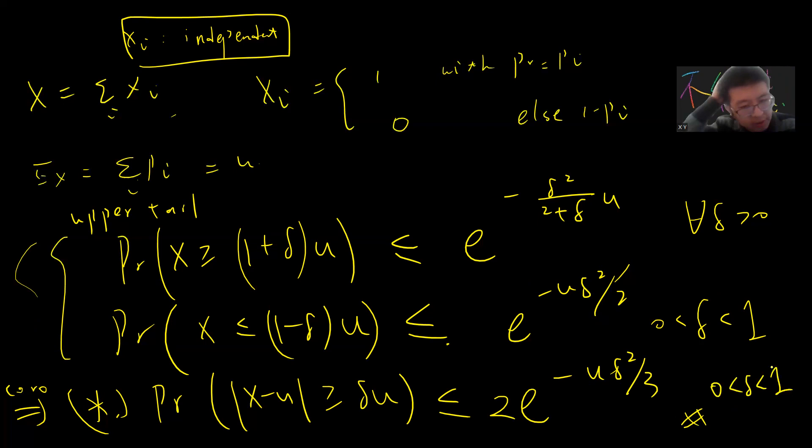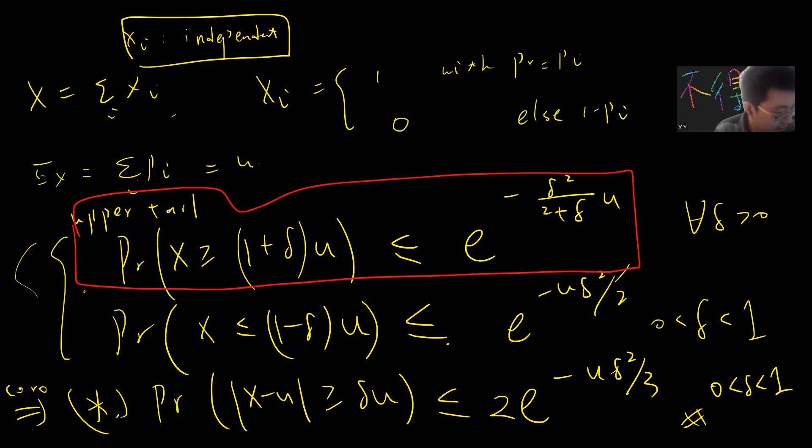The rest of the video covers the proof. The lower tail bound can be easily derived from the same idea. I will try to prove it.